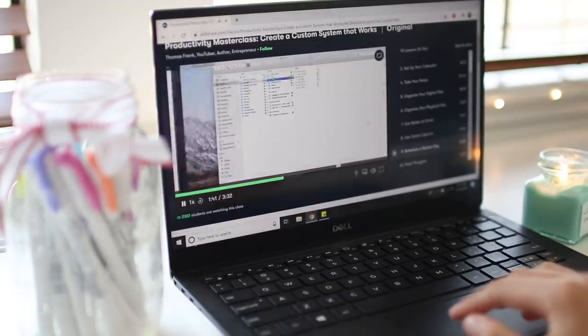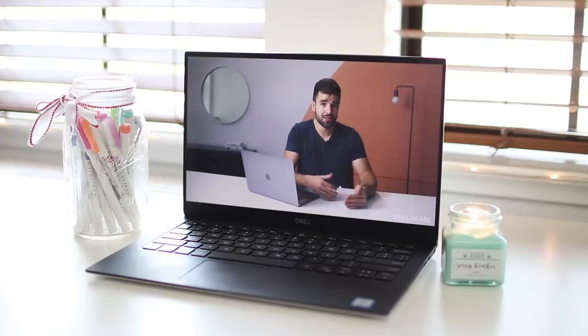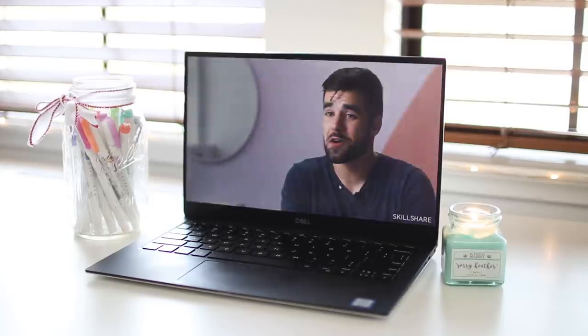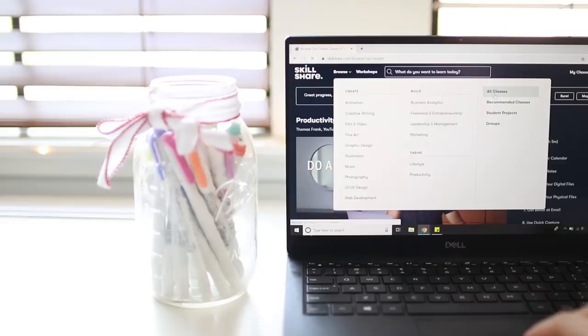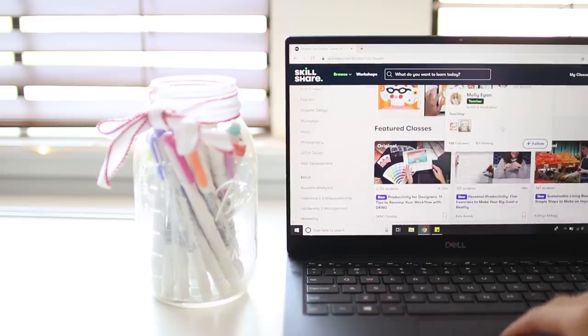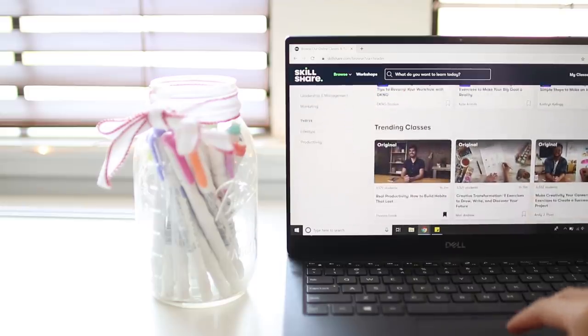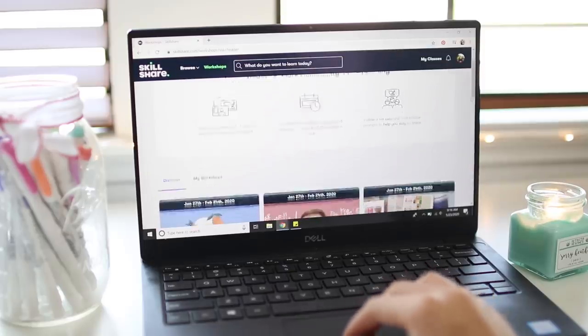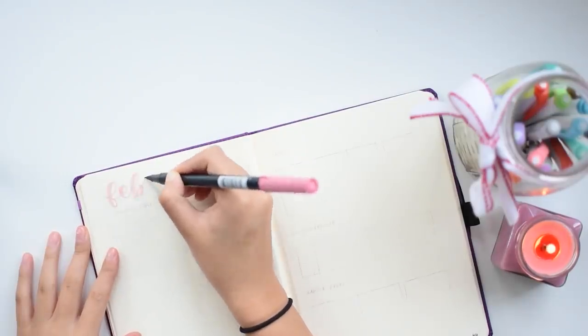I especially liked the tip about creating a regular reset day to make sure all of my trackers are updated and all of my tasks are properly migrated. Besides this course, Skillshare has thousands of other classes about creative and entrepreneurial skills. With a premium membership you'd get unlimited access to classes and communities. You can get a free two-month trial with the link in the description and after that it's less than ten dollars a month. So once again thanks Skillshare for sponsoring this video and now back to my February plan with me.